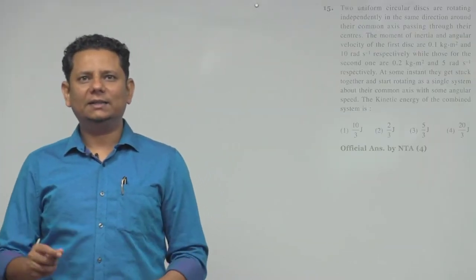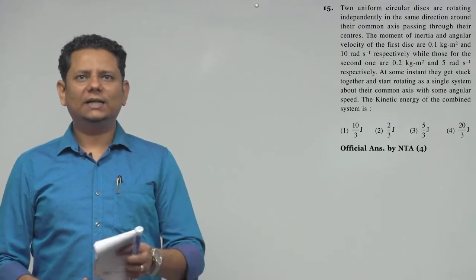Next question. Two uniform circular discs are rotating independently in the same direction around their common axis passing through their center.